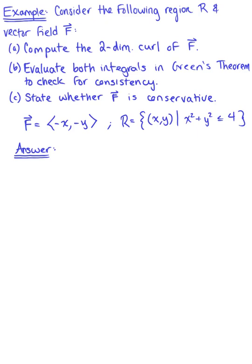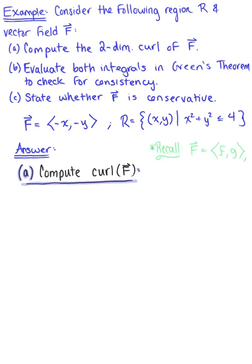The first thing we want to do is compute the two-dimensional curl of this vector field. For a vector field F with components f and g, the curl of a two-dimensional vector field is defined as the partial derivative of g with respect to x minus the partial derivative of f with respect to y.